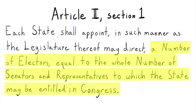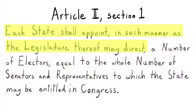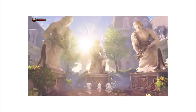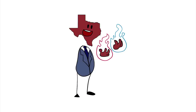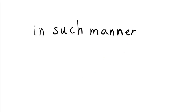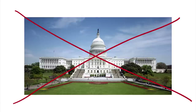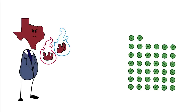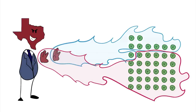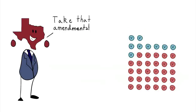The first part of that statement is where the interesting stuff happens. The founding fathers wanted to give states the ability to choose their votes for president in such manner as the legislature thereof may direct — in other words, without input from the federal government. This means that if states don't like how we elect the president, they can change our electoral system. No constitutional amendment needed.